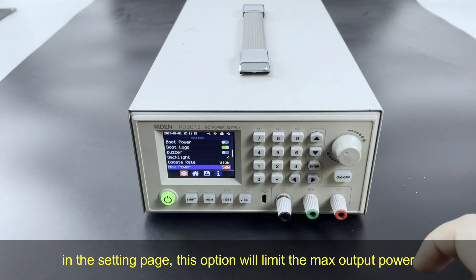In the setting page, this option will limit the max output power and it is voltage priority mode. So the power supply will decrease the current automatically to make the output power not exceed the limit.